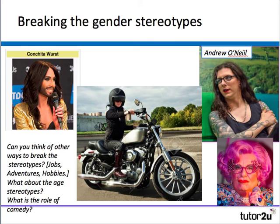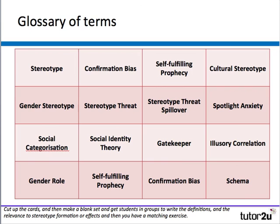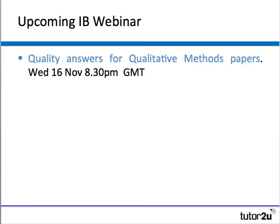Finally, there is a glossary of terms — there are many more terms associated with stereotyping than students are initially aware of. Give students a glossary, cut up the cards, make a blank set, and get students in groups to write definitions and explain the relevance to stereotype formation or effects. This creates a class matching exercise largely made by the students themselves. There is another webinar next week on qualitative methods for the IB Paper 3.